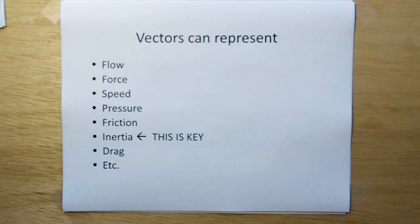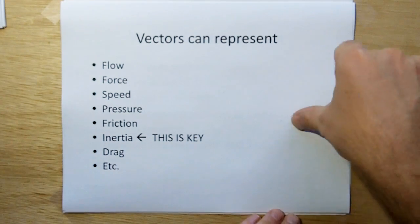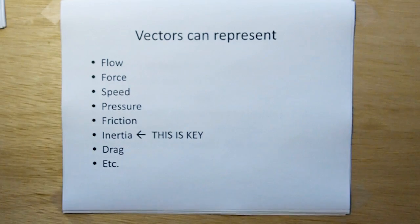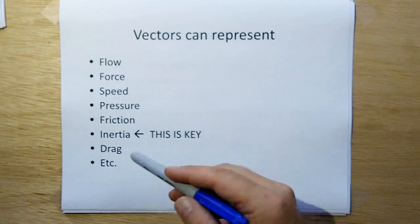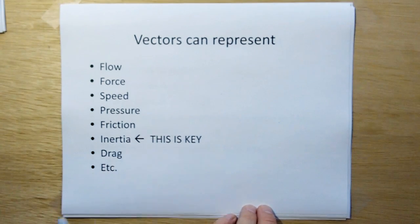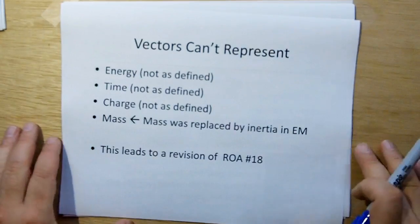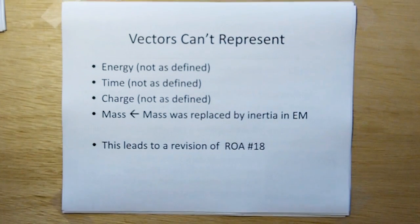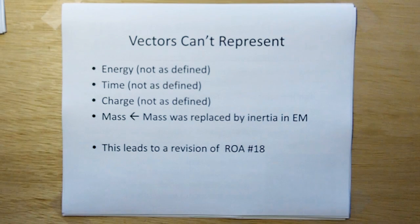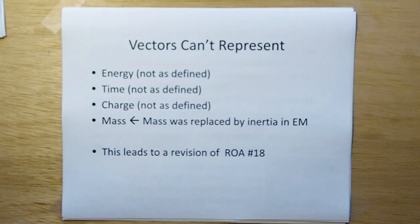Vectors can represent flow, force, speed, pressure, friction, inertia, drag. All of these items are a magnitude and a direction. Flow is a magnitude and direction. Speed, force, pressure is a magnitude and direction. Friction is a magnitude and direction. Now inertia is interesting. This is key here. Because there are certain things vectors can't represent. These things are what they call scalar fields. Energy is a scalar field. It can't be defined in terms of a vector. Time can't be determined. There's no direction in time. It just flows the same way. Charge can't be defined in terms of a vector field.